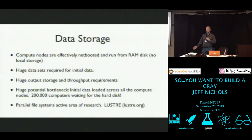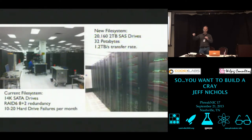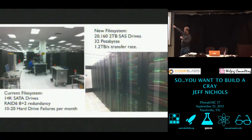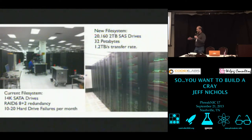The solution — it's a very active area of research — is a parallel file system. You want one file open for 200,000 processors and all of them can pull in their portion of these huge files simultaneously. Lustre is the name of the file system used at Oak Ridge. The current file system is 14,000 SATA drives in a RAID 6 configuration — eight disks plus two spares. There are 10 to 20 hard drive failures per month, which is remarkably low. It's being replaced with a little over 20,000 two-terabyte SAS drives storing a total of 32 petabytes, with a 1.2 terabyte per second transfer rate.